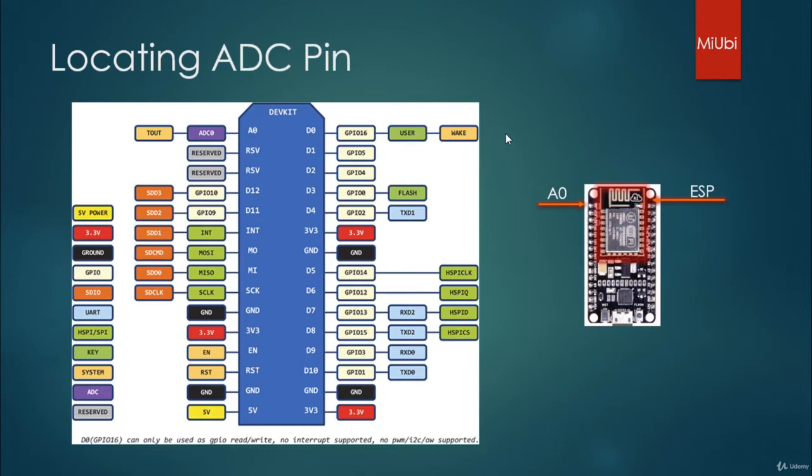Coming to ADC pin of NodeMCU. The ADC pin on NodeMCU is located on the left side of your PCB antenna, which is named as A0.